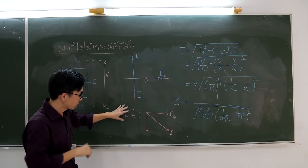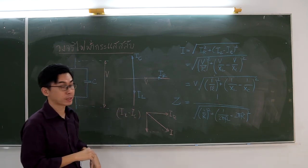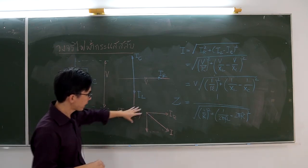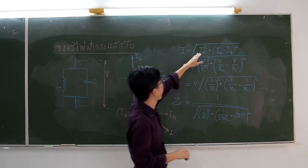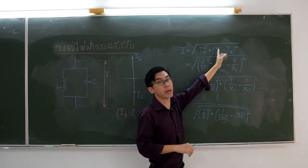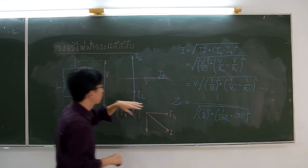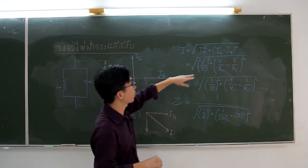So the main current is the vector sum of the two vectors. Using the Pythagorean theorem again, we find that the main current equals the square root of IR squared plus IL minus IC squared.